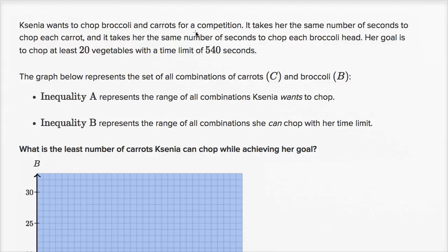Ksenia wants to chop broccoli and carrots for a competition. It takes her the same number of seconds to chop each carrot, and it takes her the same number of seconds to chop each broccoli head. Her goal is to chop at least 20 vegetables with a time limit of 540 seconds.